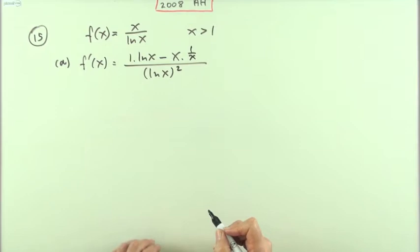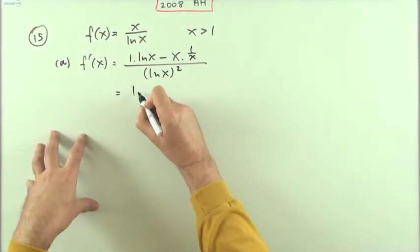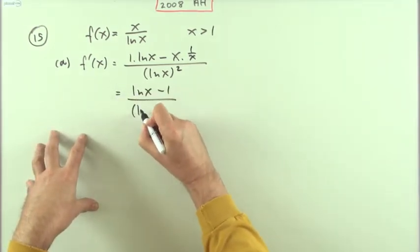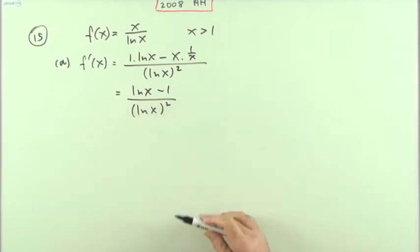That's one, leave the other function alone, minus leave the top alone, now differentiate the other function. ln x just becomes one over x. Tidy that up: ln x minus one over ln x squared. That'll just have to stay like that; there's no rule for simplifying products of logarithms.